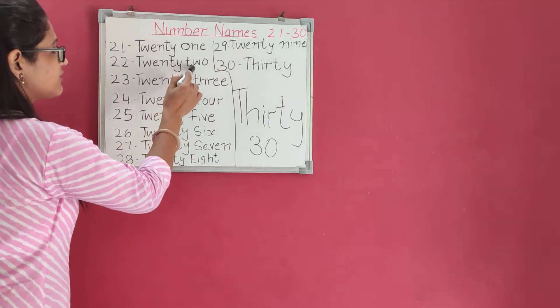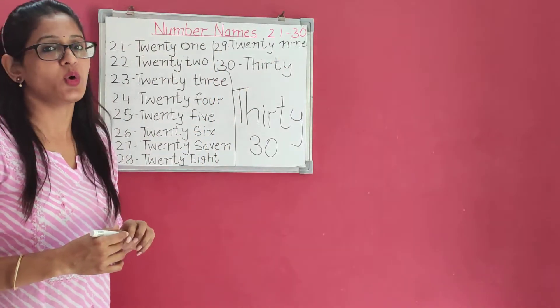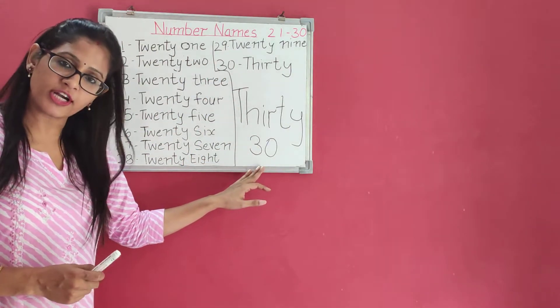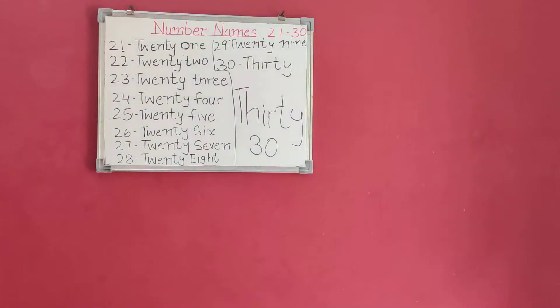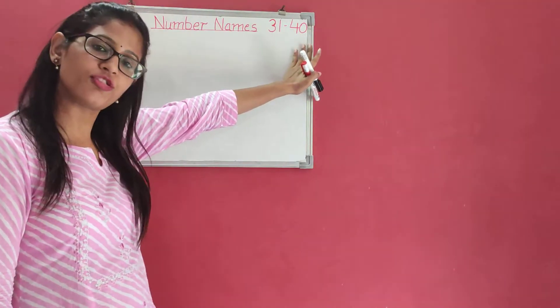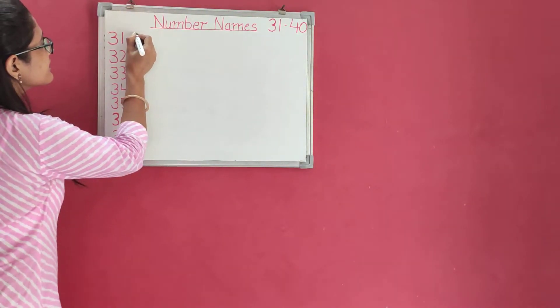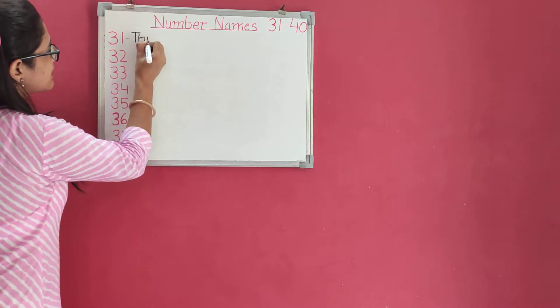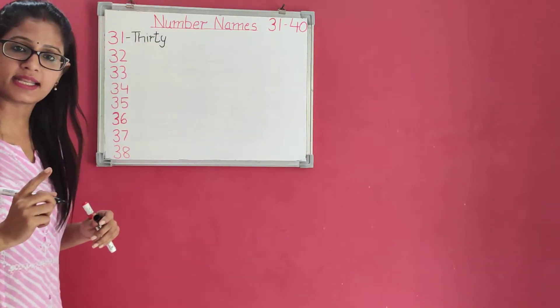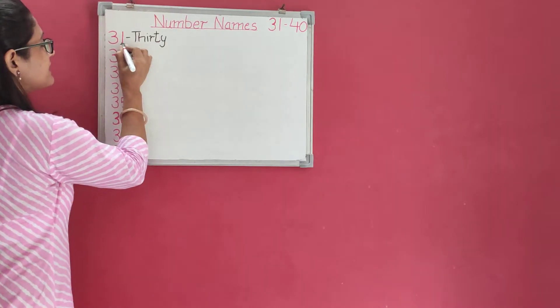You know what we are going to do? We will do thirty-one to forty. We will start from thirty-one. Okay? So, T-H-I-R-T-Y, thirty. And what comes after thirty? It is one. So, O-N-E, one. Thirty-one.